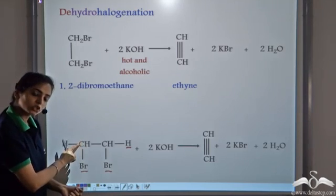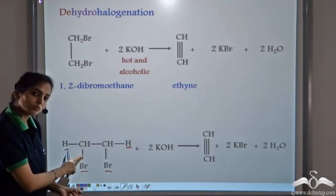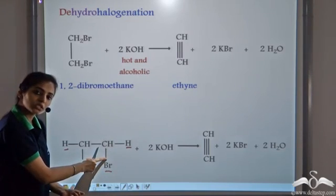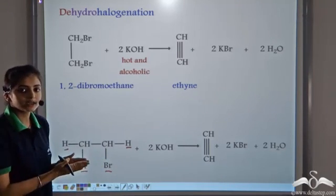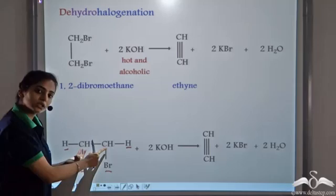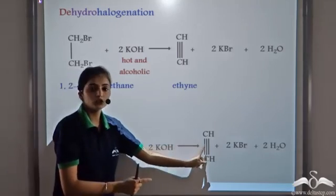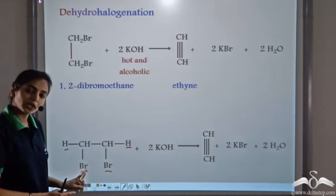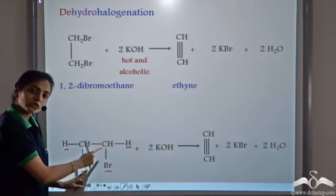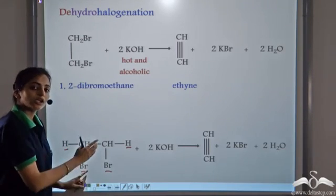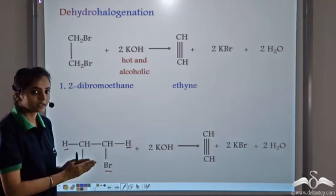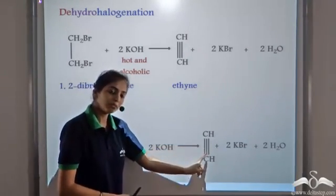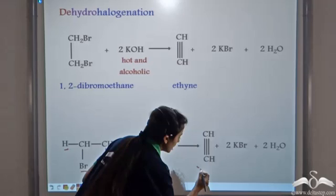Now, this carbon is short of two single covalent bonds and this carbon is also short of two single covalent bonds. So in order to satisfy its tetravalency, both the carbon atoms now form a triple bond. As one hydrogen and one bromine atom from both the carbon atoms is removed, in order to satisfy its tetravalency, the two carbon atoms form a triple bond between them and this is how they form ethyne.